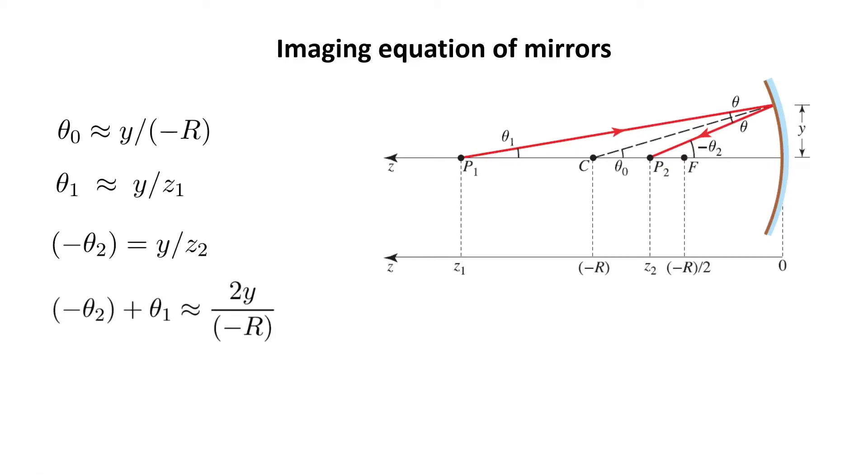If you remember from the previous slide, I proved that minus theta 2 plus theta 1 is 2 theta 0. And theta 0 is y over minus R. So this should be equal to 2y divided by minus R. Then I can substitute theta 1 and theta 2 from these two equations and put it equal to the right side.